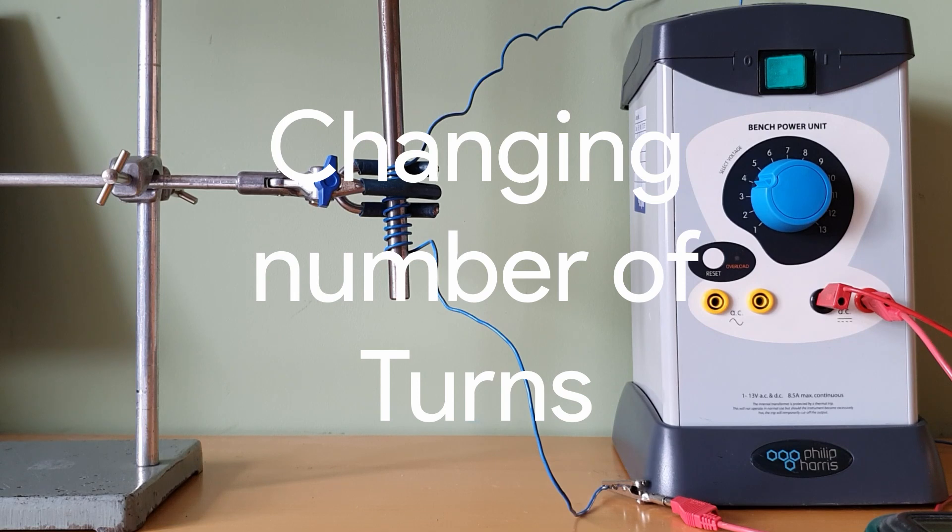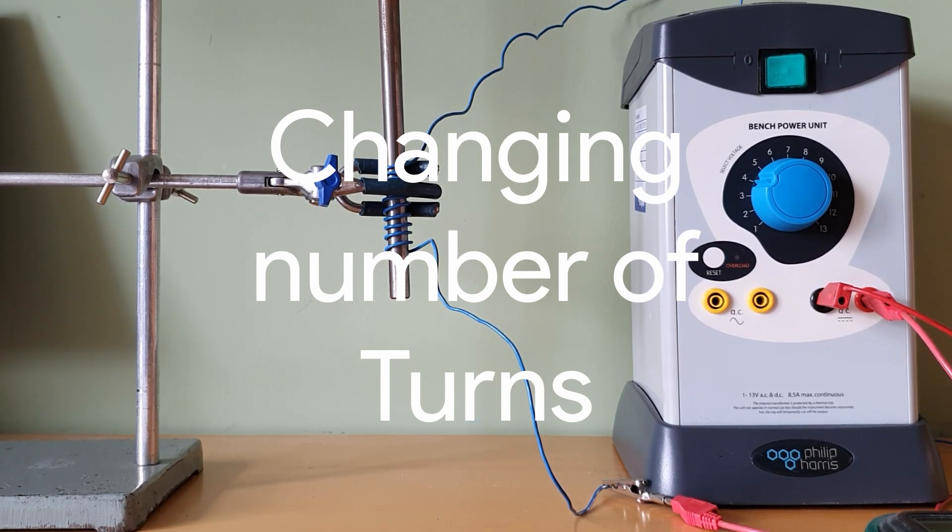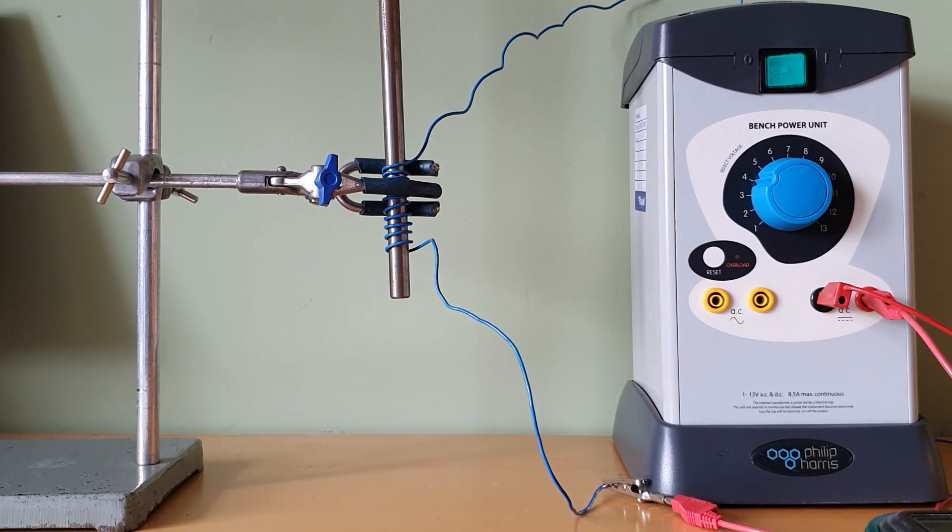Now we're going to investigate how changing the number of turns affects the strength of the electromagnet. The way we'll test that is by seeing how many nails the electromagnet can pick up with different numbers of turns. In this case we're going to keep the current the same, we're going to keep the core the same, they're going to be our control variables and what we're going to change, in other words our independent variable is going to be the number of turns and our dependent variable the thing that we're measuring will be the number of nails.